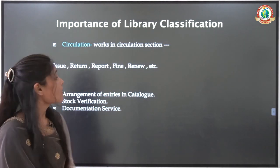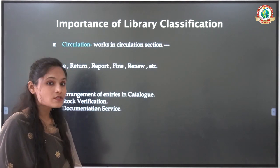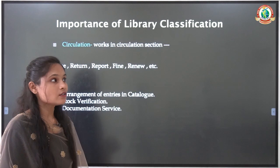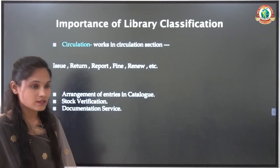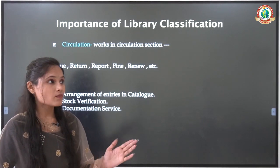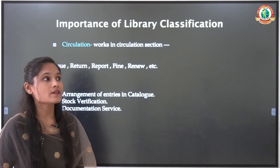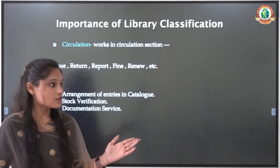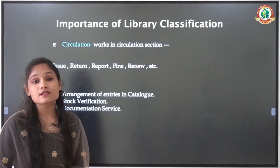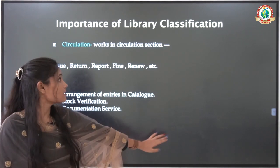Arrangement of entries in the catalogue: in open access systems in libraries, a catalogue has to be made. If books are arranged properly, making catalogue entries will be much easier; if not arranged, there will be difficulties in making catalogue entries. Stock verification will also be easy: if books are in a proper manner, counting books or verifying stock according to any stock verification scheme becomes very easy. Documentation service, which is of two types — active and passive — both services will be much easier to provide through library classification.